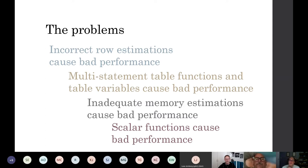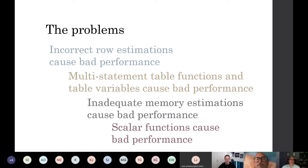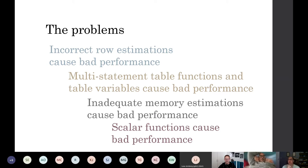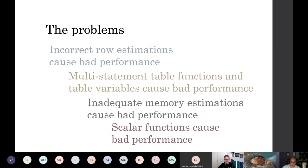I refer to scalar functions as developer pit traps because developers love them but don't realize how bad they are. I did some tests on scalar functions for a blog post. I took a simple scalar function doing an aggregation and ran the query with that expression inline — it ran in about 15 seconds. Then I ran it with the function, 25 times each. I hit F5, went to get supper, came back and found the function had run twice. The equivalent query without the function ran 25 executions in about three minutes. With the function: 16 hours.